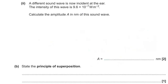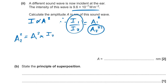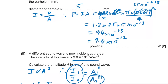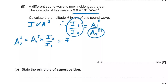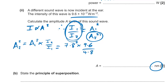Part two: new intensity is 9.6 × 10⁻⁷ W/m². Since intensity ∝ amplitude², the ratio of intensities = ratio of amplitudes squared. Amplitude₂² = 7.8² × (9.6/4.8) = 60.84 × 2 = 121.68. Square-rooting gives amplitude₂ ≈ 11 nm.